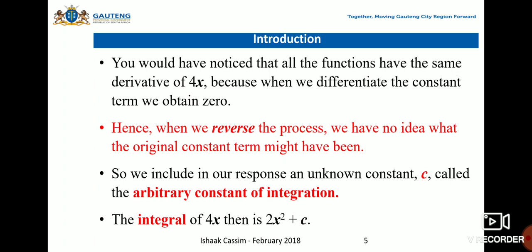Hence, when we reverse the process, we have no idea what the original constant term might have been. The reverse process of differentiation is integration, so we include in our response an unknown C called the arbitrary constant of integration. The integral of 4x is then 2x² + C, where C is always a constant.